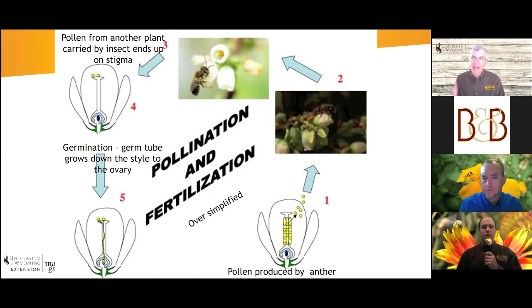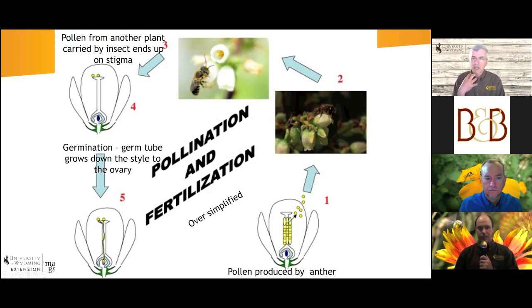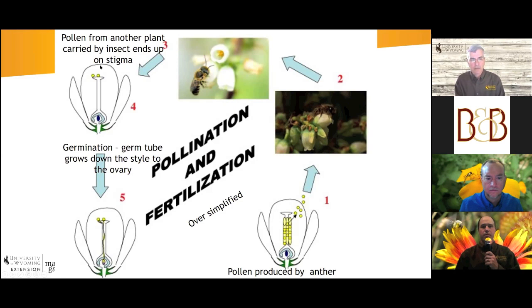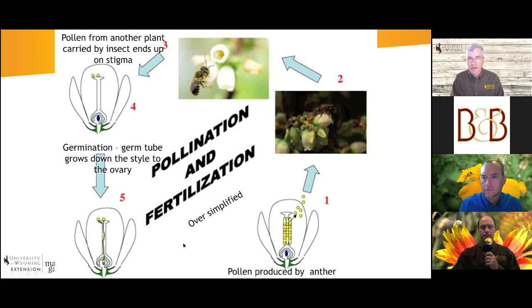The pollinator visits the flower and transfers pollen from the anther — physically, whether they collect it on their body hairs or in pollen baskets — and then visits another flower of the same species, getting that pollen on the stigma, which goes down and forms the seeds. It's pretty critical for the plants.